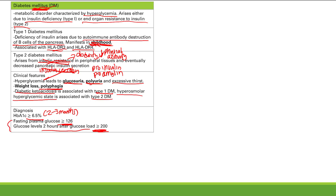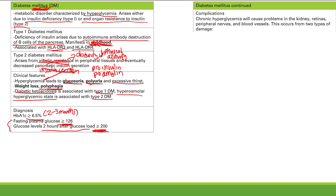Now, complications of diabetes — we talked about symptoms, but there are a lot of complications. These are the real problem with diabetes. The complications occur in the kidney, in the retina, in the peripheral nerves, and in the blood vessels. You may have heard of diabetic nephropathy — that's problems in the kidney — diabetic retinopathy — problems in the retina — and diabetic neuropathy — problems of the nerves.